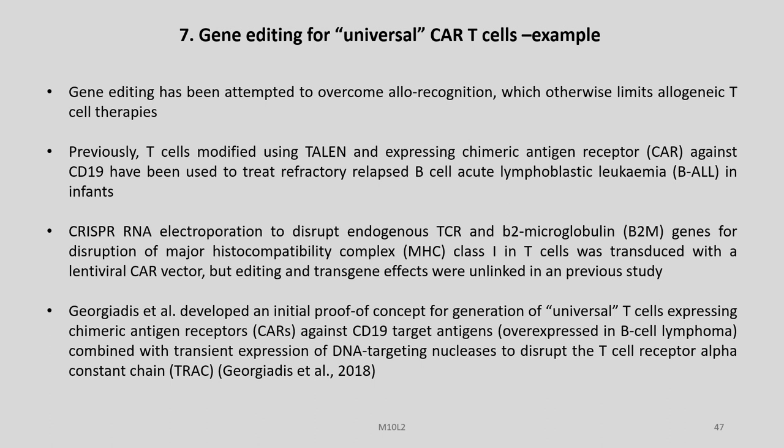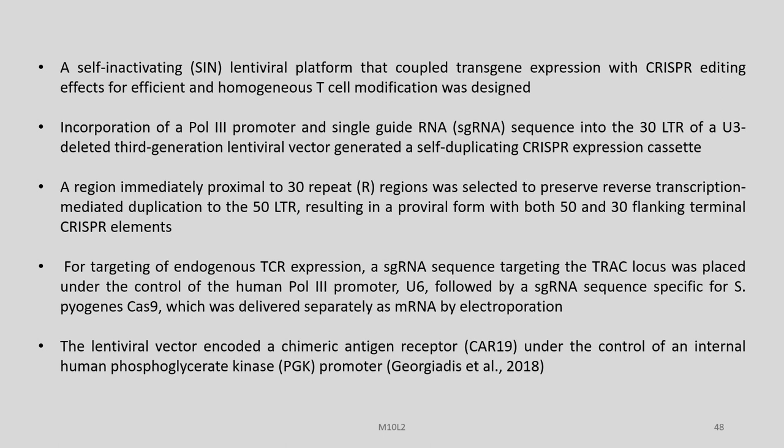Georgiadis et al. developed an initial proof of concept for generation of universal T-cells expressing chimeric antigen receptors against CD19 target antigen, combined with transient expression of DNA-targeting nucleases to disrupt the T-cell receptor alpha constant chain, as reported in 2018. A self-inactivating lentiviral platform that coupled transgenic expression with CRISPR editing effects for efficient and homogeneous T-cell modification was designed. Incorporation of a pol III promoter and single guide RNA sequence into the 3-prime LTR of a U3-deleted third-generation lentiviral vector generated a self-duplicating CRISPR expression cassette.